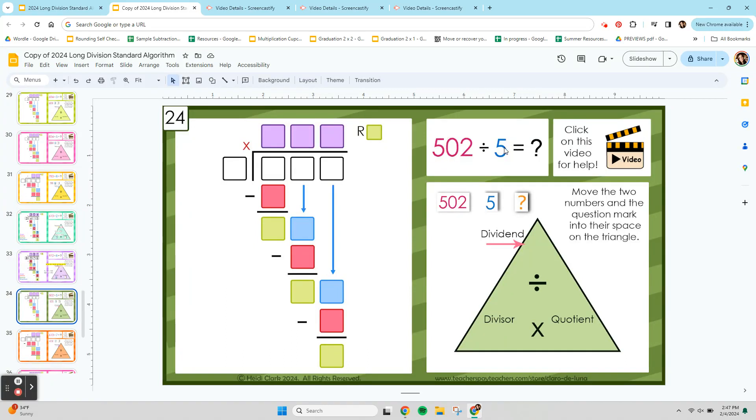Let's do 502 divided by 5. 502 is our dividend. It's getting divided up into 5 groups. And our quotient is how many will be in each group.